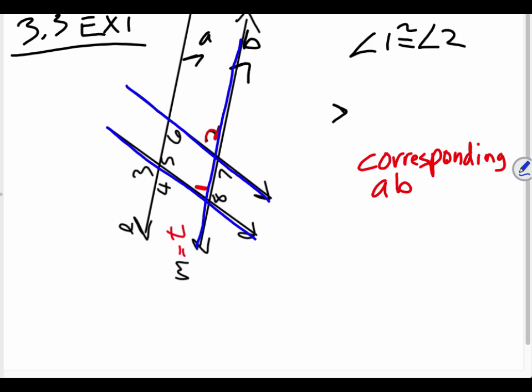Well, it's a transversal too, but the only thing we know is that 1 and 2 are congruent. Well, making that line the transversal makes angles 1 and 2 corresponding, and corresponding angles are congruent. Well, what two lines are they corresponding with regards to A and B? Does that make sense?